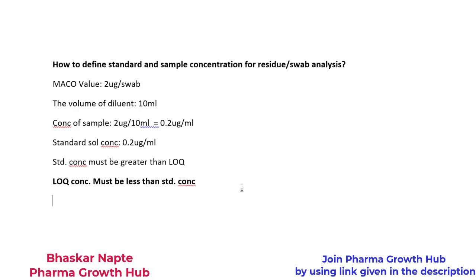Now there could be two possibilities. I may be able to achieve an LOQ less than 0.2 microgram per mL, and hence I can select those conditions and move ahead. But in case I am not able to achieve an LOQ of 0.2 microgram per mL or less than that, then how to deal with the situation? In that situation, I need to increase the concentration of the solution itself. How to increase the concentration of the test solution? The solution concentration gets defined by the volume of diluent I have added.